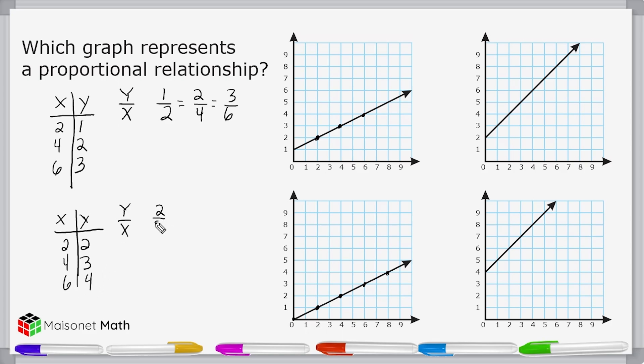So if we compare 2 to 2, 3 to 4, and 4 to 6, we can clearly see that these are not equivalent ratios. 2 over 2 is equal to 1. 3 over 4 is equal to 0.75. And 4 over 6, which is 2 thirds, is equal to point repeating 6. So these values are definitely not equal to each other. Therefore, they are not proportional. 2 over 2 is not equal to 3 over 4. 3 over 4 is not equal to 4 over 6.